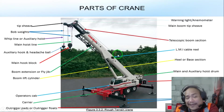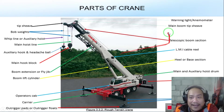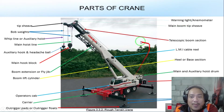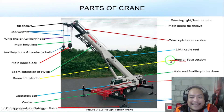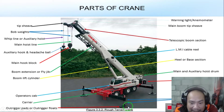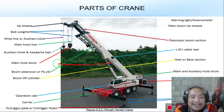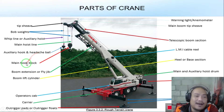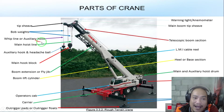This is a rough terrain crane and these are its parts: from the top — warning light or anemometer, main boom, telescopic boom, load movement indicator, cable, main and auxiliary hoist drum, counterweight, outriggers, outrigger pads, operator cab, carrier, boom lift cylinder, extension jib, main hook block, auxiliary hook block, main hoist line, auxiliary hoist line, bob weights, and tip sheave.